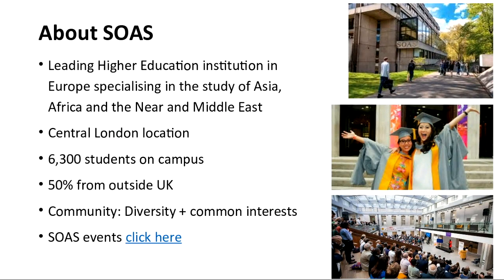SOAS is a pretty small campus of 6,300 students. On one hand there is a very strong community feel, which is what I always hear from our students. It also means it's quite easy to navigate the school, get to know other departments and students undertaking a wide range of degrees, and explore other fields of study.